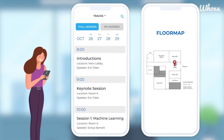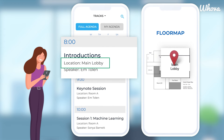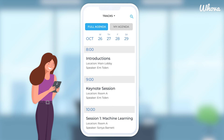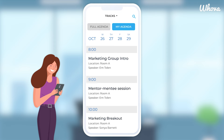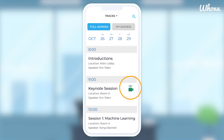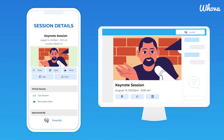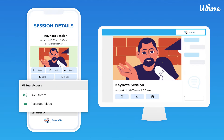You can also link sessions to locations in our interactive floor map to guide attendees. Your attendees can even personalize their own schedules and set reminders for sessions. And if your event is virtual or hybrid, they can view any session streams or uploaded videos right from the app.